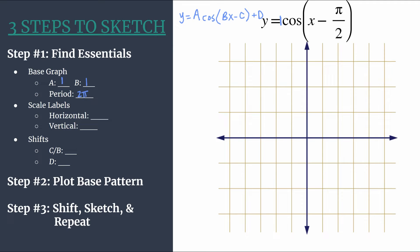Now let's go ahead and find our scale labels here. Remember with our three steps to sketch method, we do this very intentionally. We want to take our period and divide by four and we'll use that to label our horizontal tick marks. So period two pi divided by four. That's two pi over four or pi over two. And that's how we'll label our horizontal tick marks. Vertically, we'll use one.